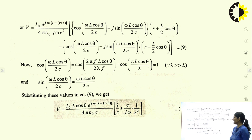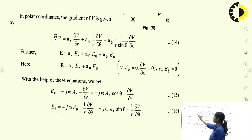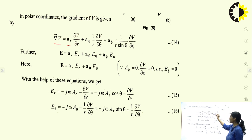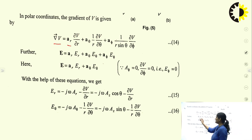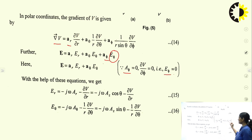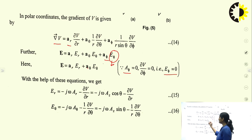From the previous lecture, the gradient of V in spherical coordinates is: ∇V = â_r (∂V/∂r) + â_θ (1/r)(∂V/∂θ) + â_φ (1/(r sinθ))(∂V/∂φ). Now, E = â_r * E_r + â_θ * E_θ + â_φ * E_φ. Since a_φ = 0 and ∂V/∂φ = 0, E_φ = 0, so E = â_r * E_r + â_θ * E_θ.